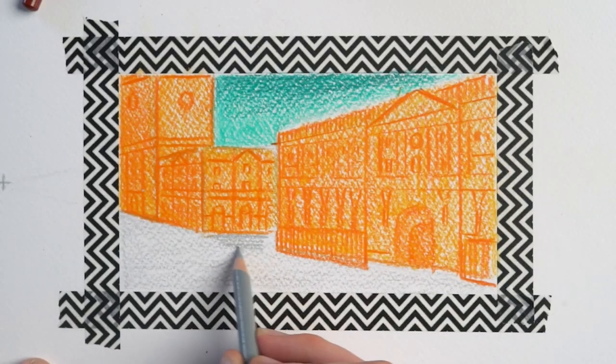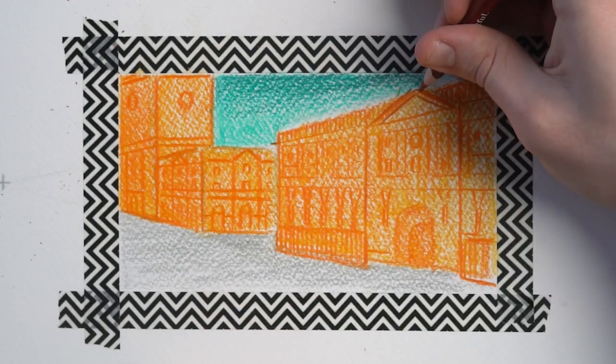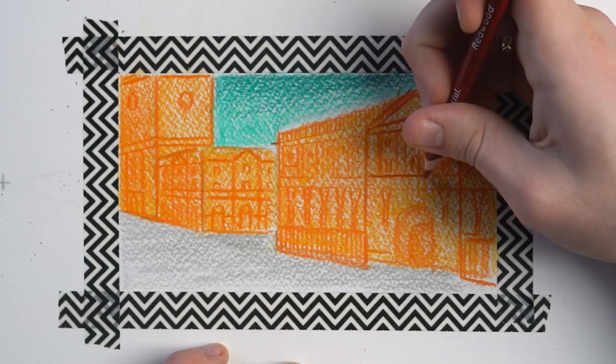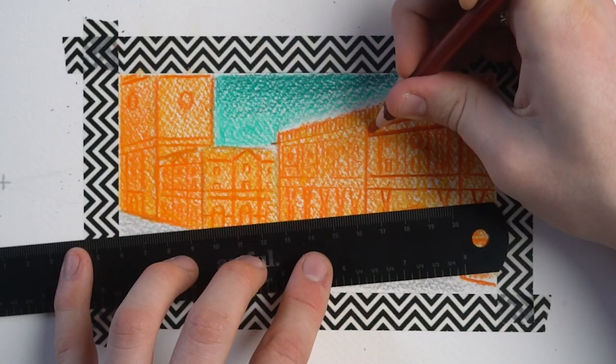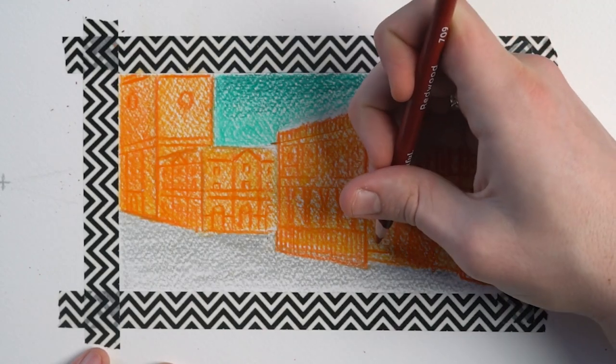To try and make the more graphic lines pop a bit more, I'm tracing over the details of the building with my redwood pencil. It's one of the features of colouring pencils that I like the most. You can create these really dense, rich colours just by continuing to layer the pencils on top of one another.